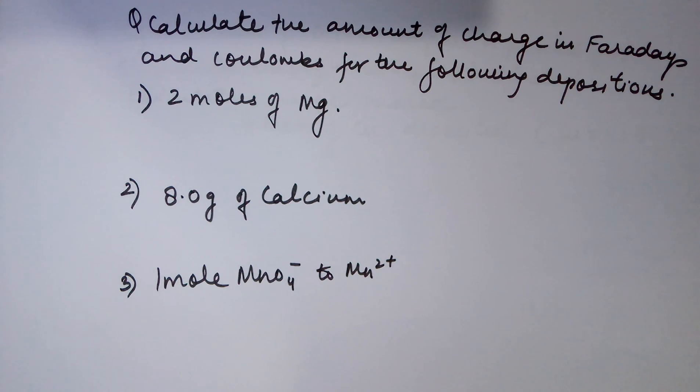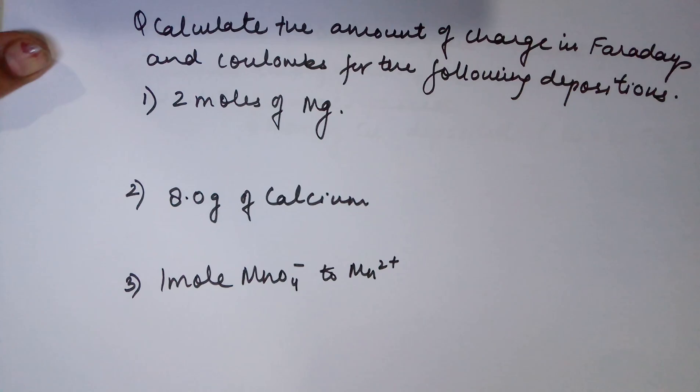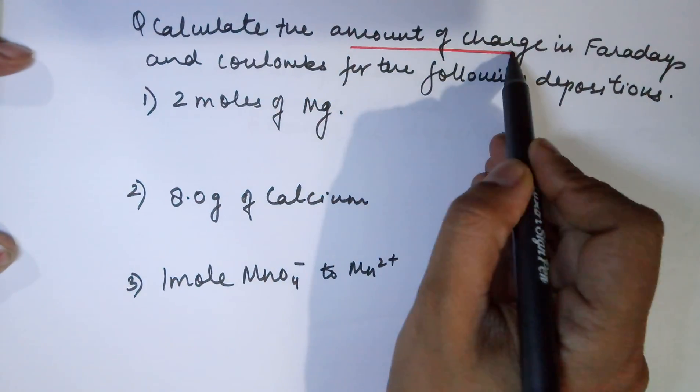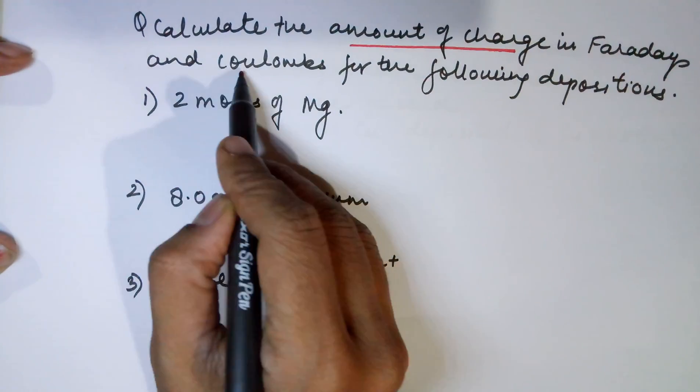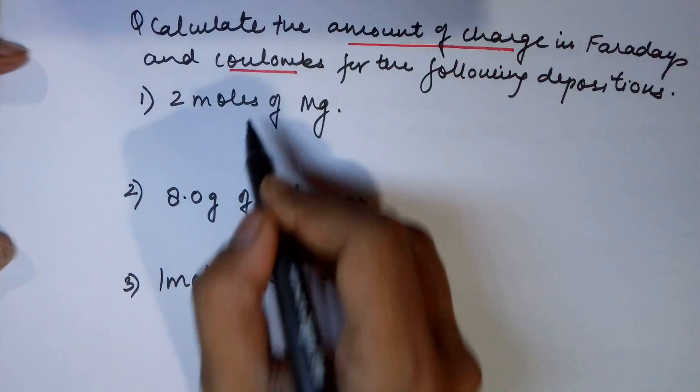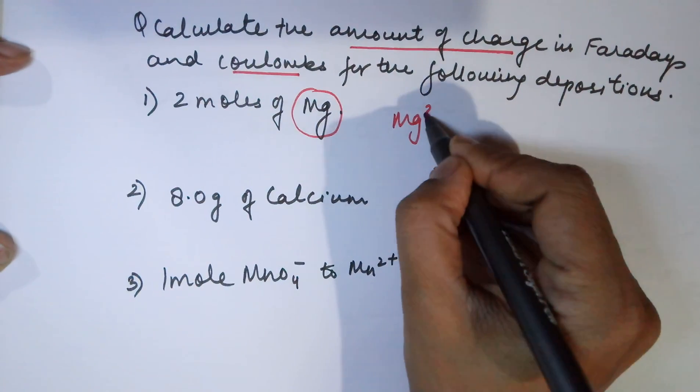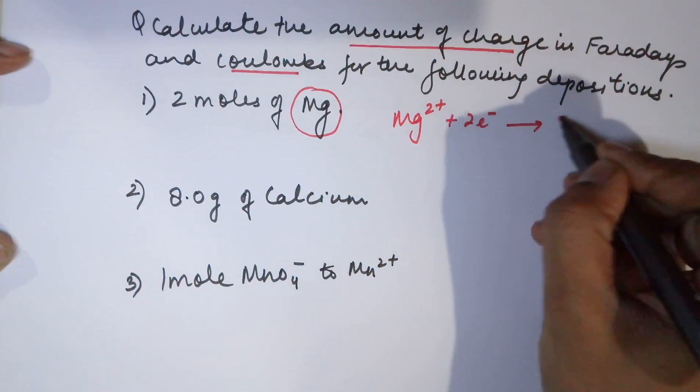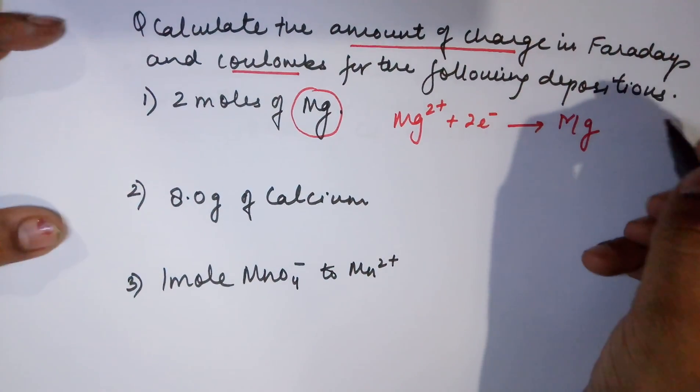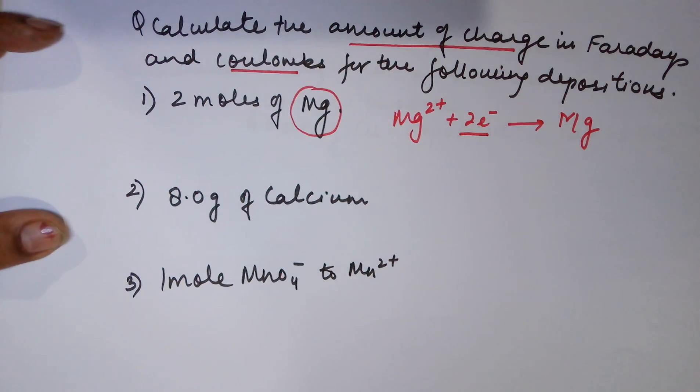We will do a few quantitative questions to get the knack of Faraday's law. The first question is: calculate the amount of charge in Faraday's and also in coulombs for the following depositions. If I am talking about magnesium, we know if magnesium is deposited, the reaction that is happening at the cathode would be Mg^2+ + 2e^- → Mg.